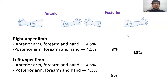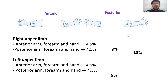Right upper limb: anterior arm, forearm, and hand is 4.5%, and posterior arm, forearm, and hand is 4.5%, totaling 9%. Similarly, the left upper limb — anterior and posterior arm, forearm, and hand — is 4.5% and 4.5%, totaling 9%. So both upper limbs together are 18%.